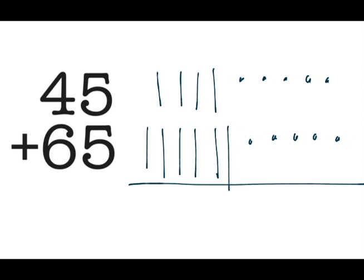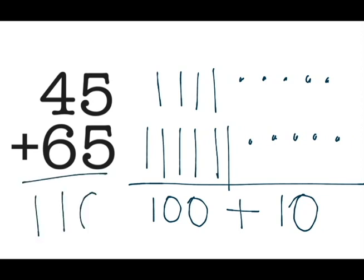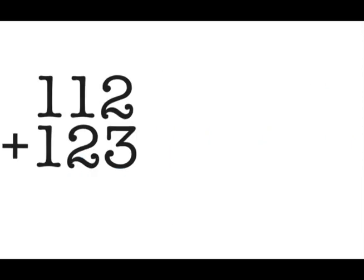I can either go ahead and start looking at my tens first or my ones. I'm going to add my tens first. I see that I have 10 groups of 10 to make a total of 100, and I have 10 ones. 100 plus 10 equals a total of 110.